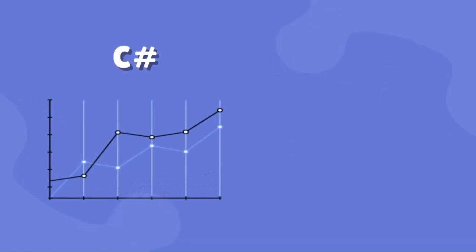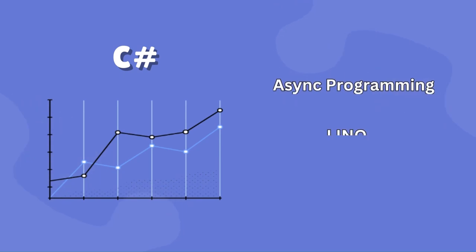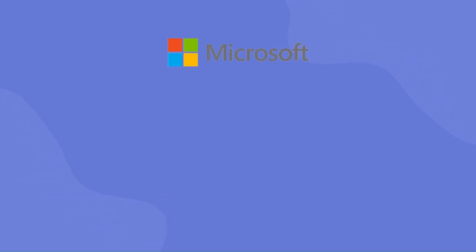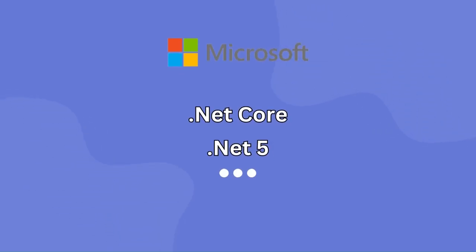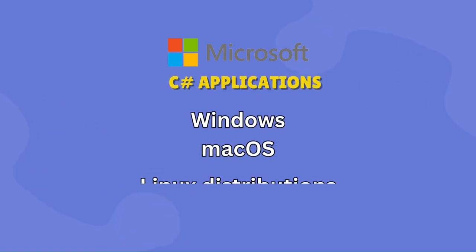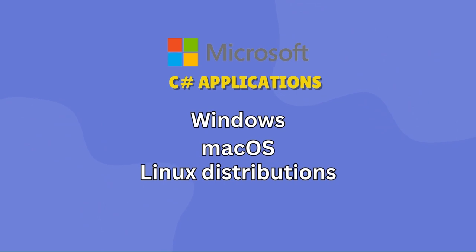C# has evolved over the years and includes many modern language features such as support for asynchronous programming with async/await, language integrated query for data manipulation and more. While C# was initially developed for Windows, Microsoft has since created tools like .NET Core and .NET 5 and later versions to enable cross-platform development, allowing developers to build C# applications that run on Windows, macOS and various Linux distributions.